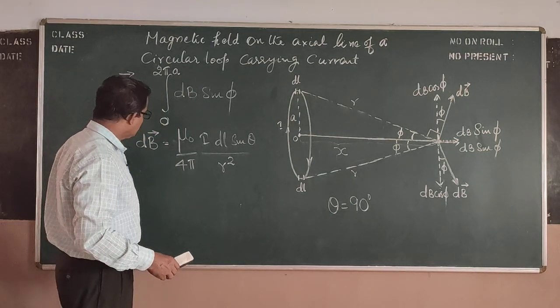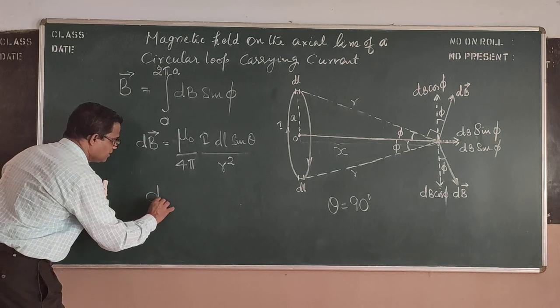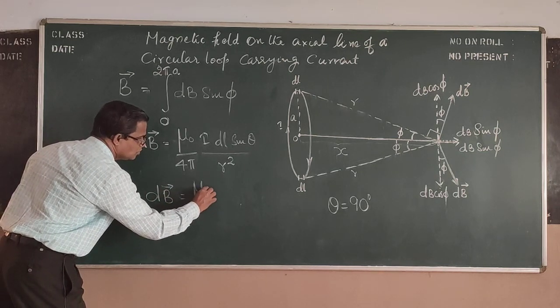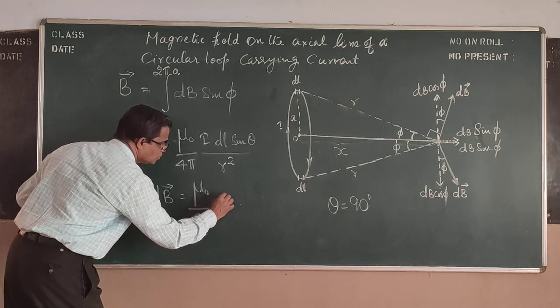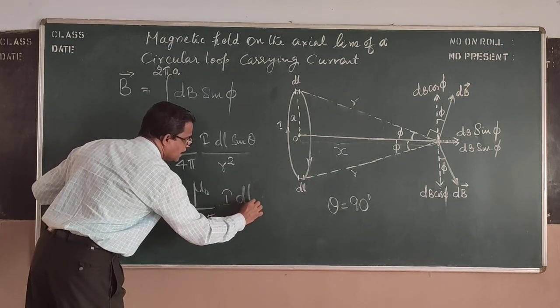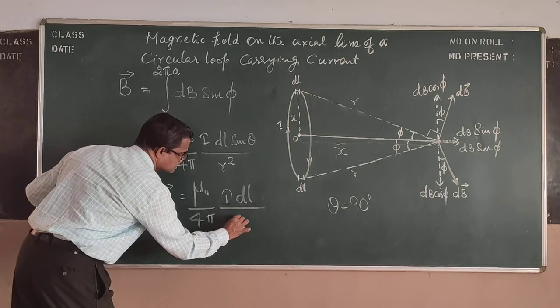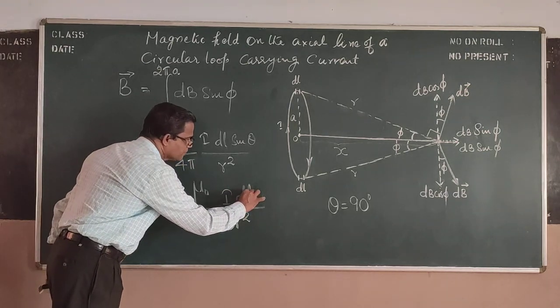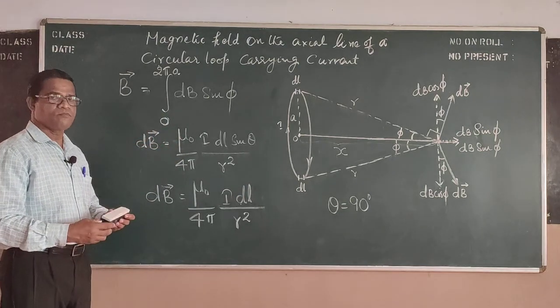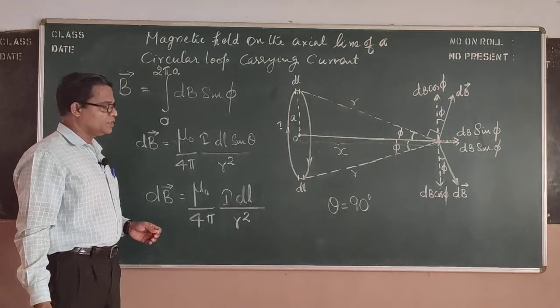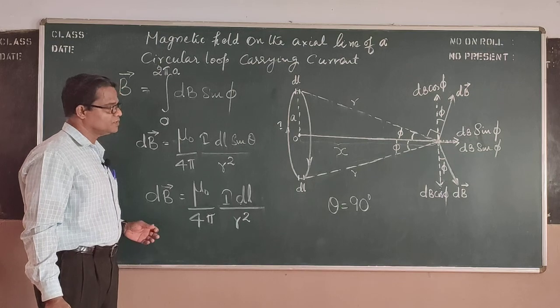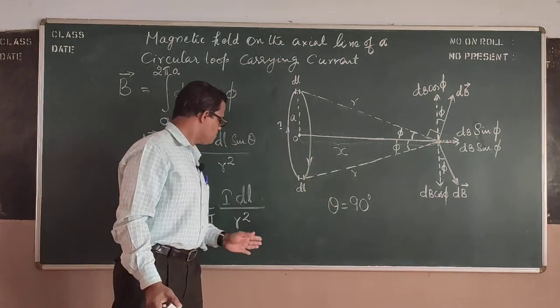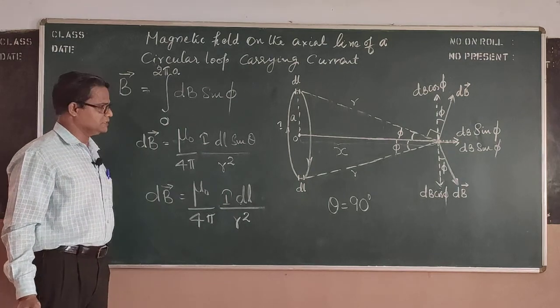And therefore, DB will be equal to mu_0 by 4 pi into I DL by R square. Now theta being 90 degree is constant and we are getting it like this. Now we put this one into this particular equation.